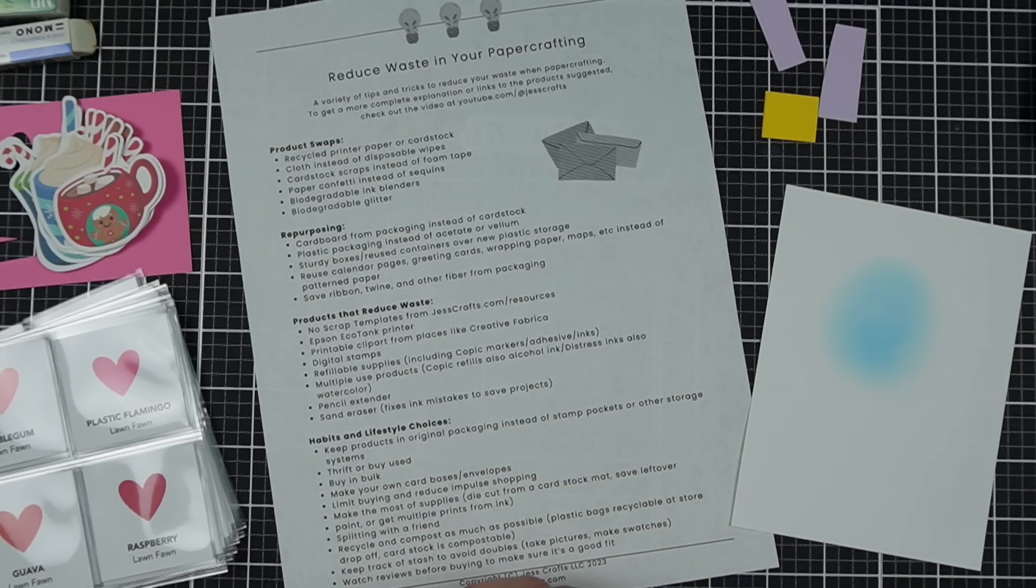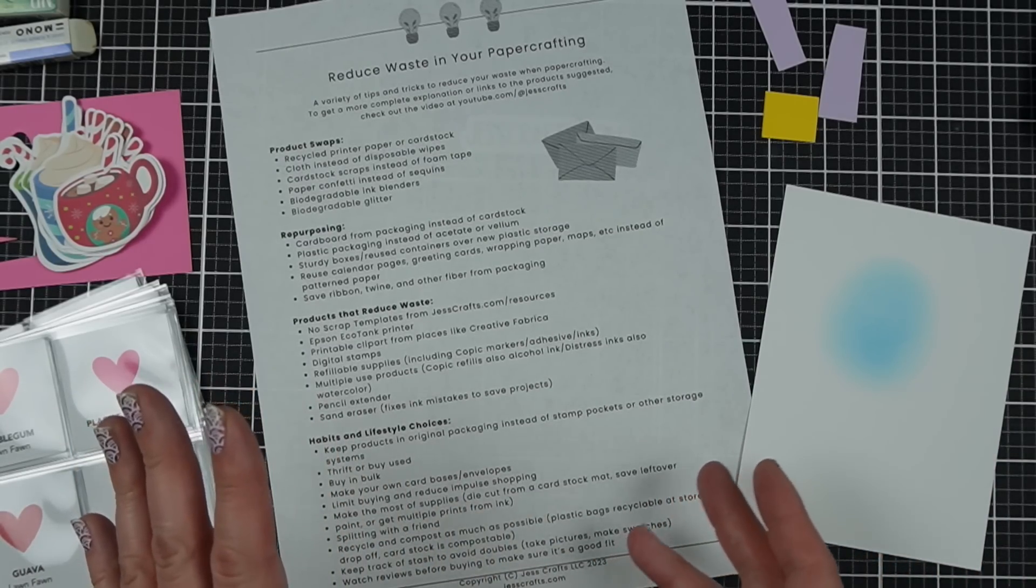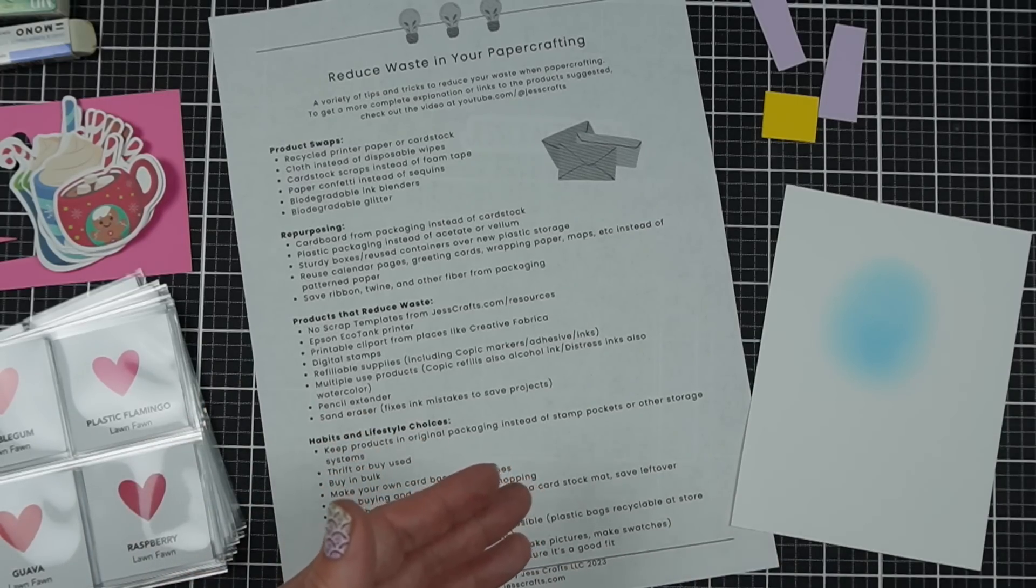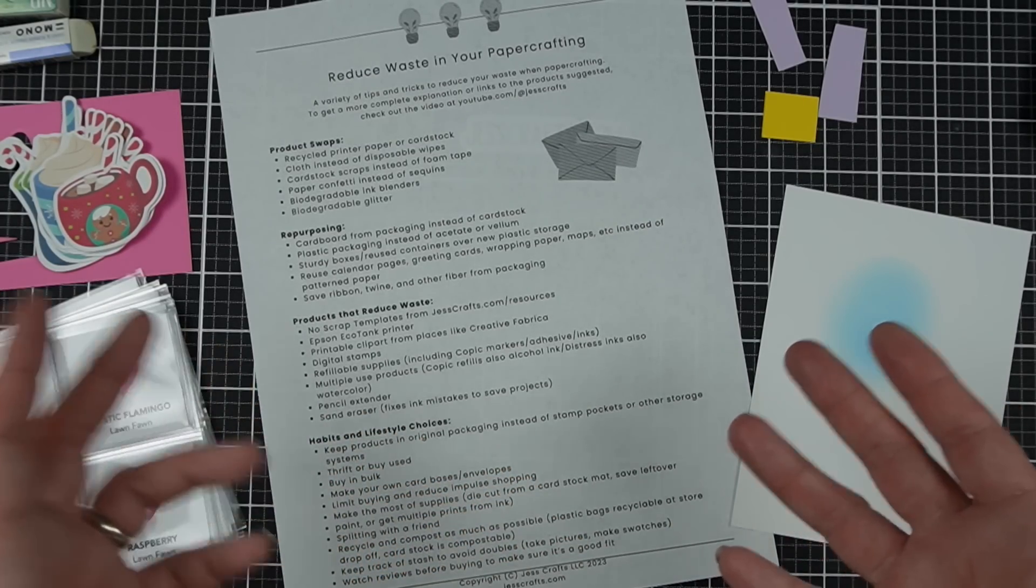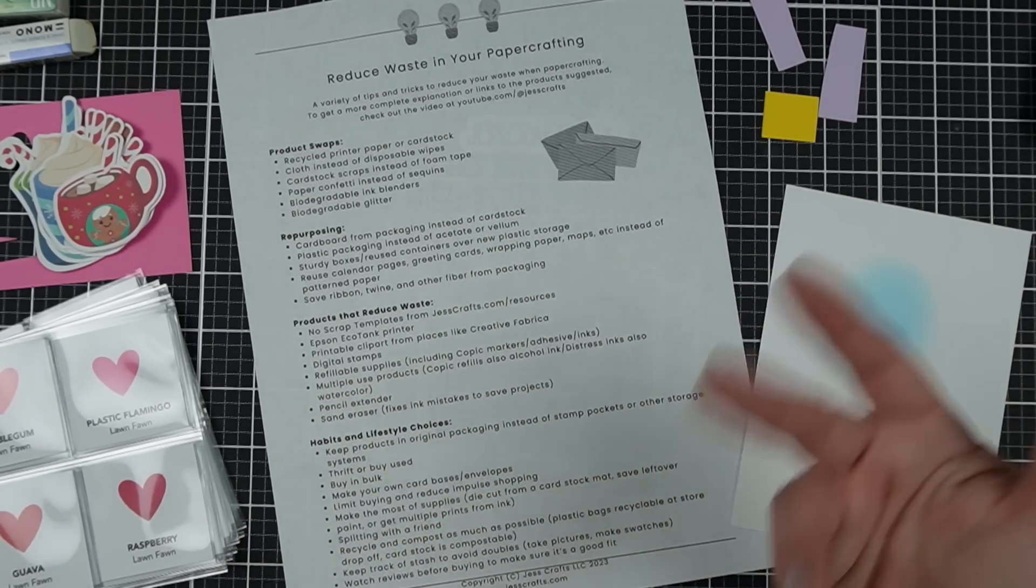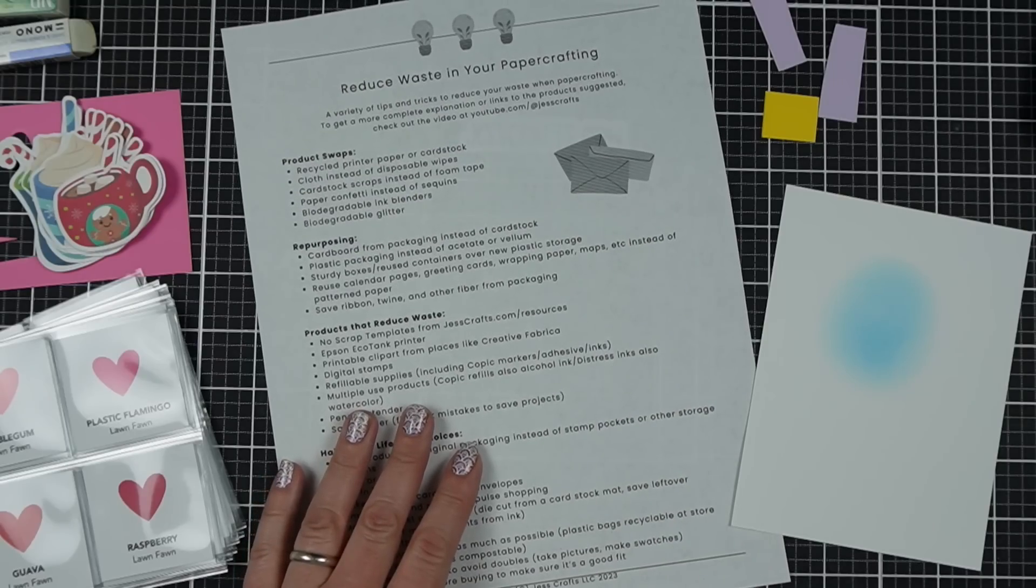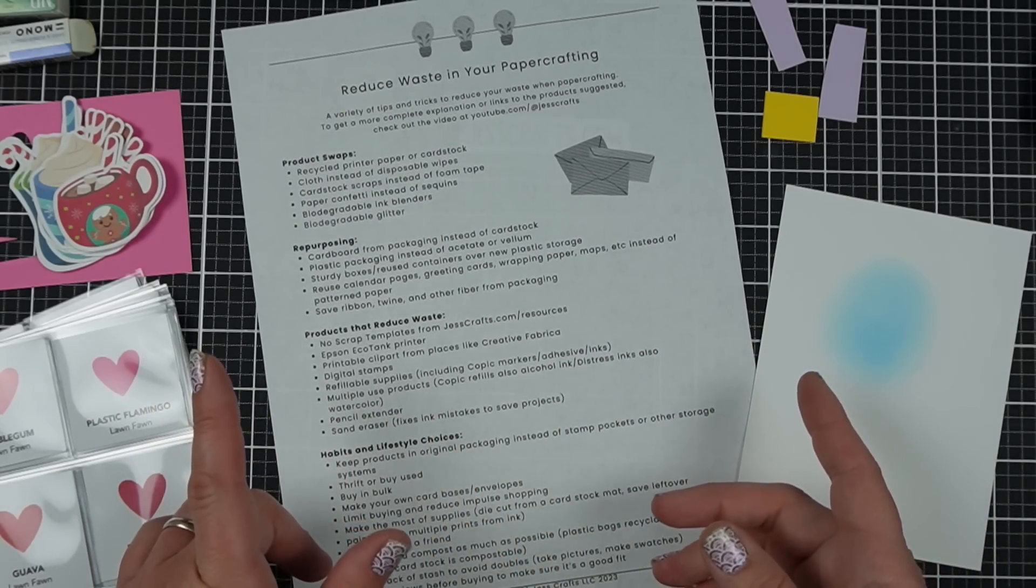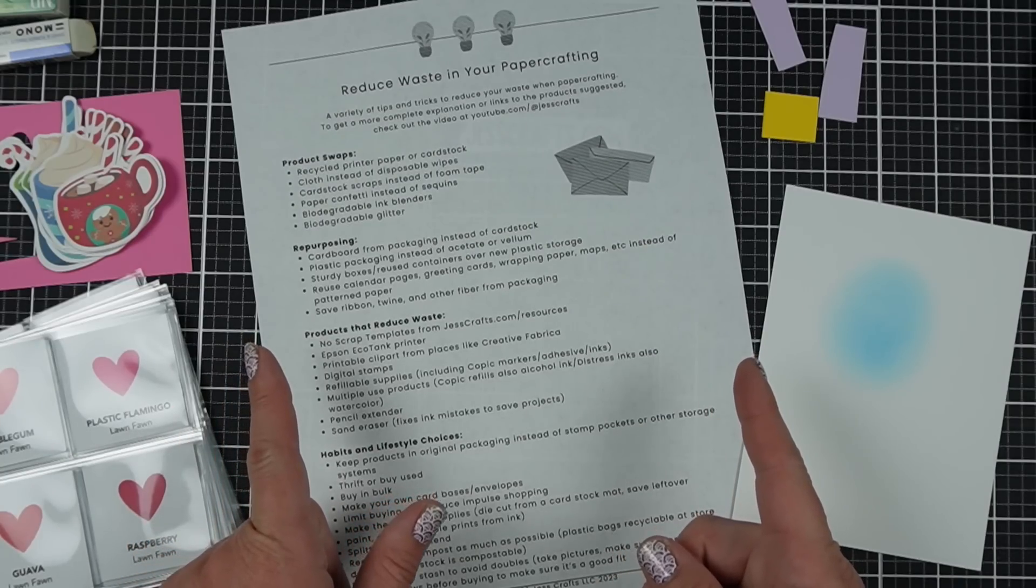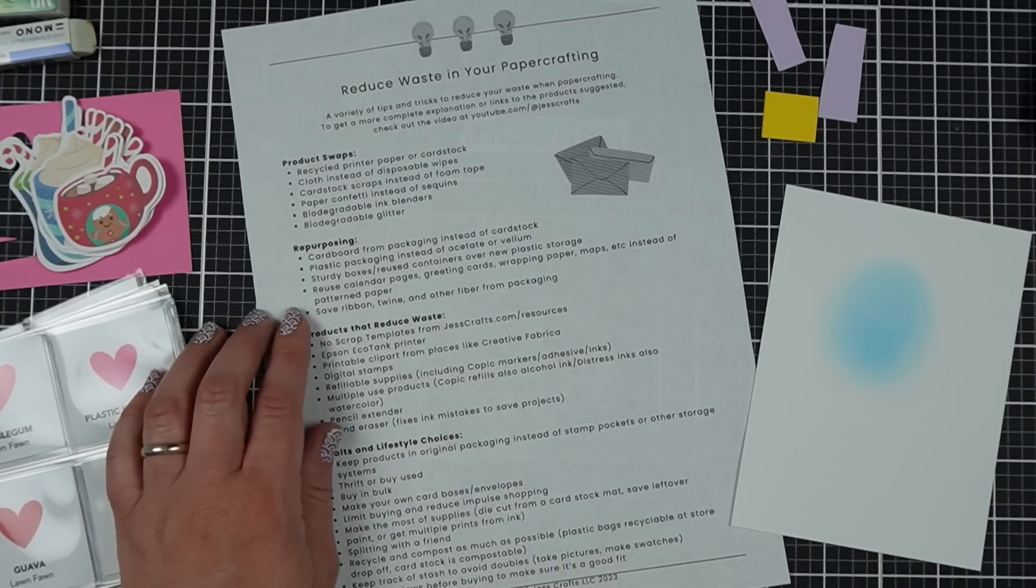Plastic packaging instead of acetate or vellum. So if you get the plastic packaging that your stamps and stuff come in, instead of throwing that away and then buying other plastic, using that is your like for a shaker card. I was also thinking for vellum, sometimes you get those glassine envelopes. They're not quite the same as vellum, but just looking at your before you throw something away. And you know what? I know all of us crafters do this because we see treasure where other people see trash for sure.